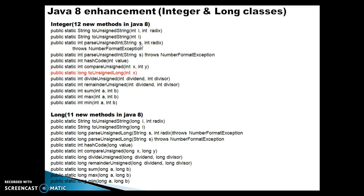Next we have parseUnsignedInt, which takes a String and a radix — you can pass radix values like 2, 8, 10, or 16 — and converts that string into the corresponding integer value based on the radix. There is also a single-parameter overload of parseUnsignedInt that takes just the string and converts it to an integer. If the conversion fails, for example if you pass alphanumeric input, you will get a NumberFormatException.